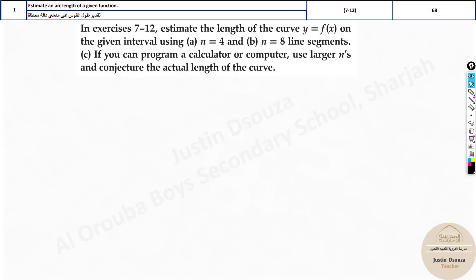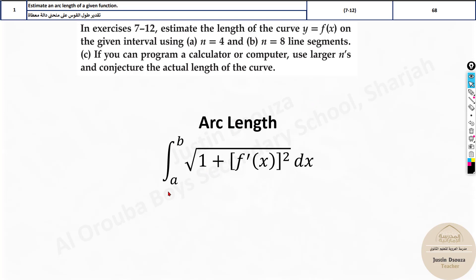In this particular problem, we've been asked to find the arc length depending on n equals 4 or n equals 8, or you can find it for larger n values. The most easiest way for this is finding it with the integral formula. You will come to learn about integrals in the next term, but if you just remember this formula it is more than enough, because you can use a calculator and directly solve it. There are a few things to be noted in this formula.